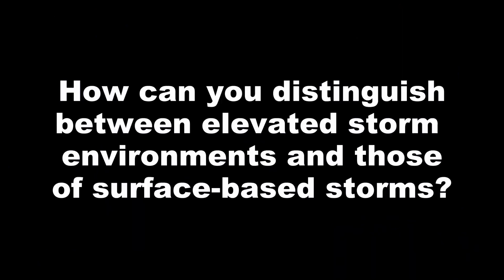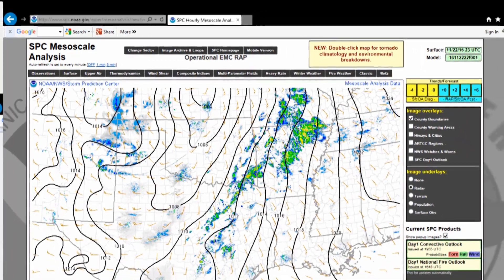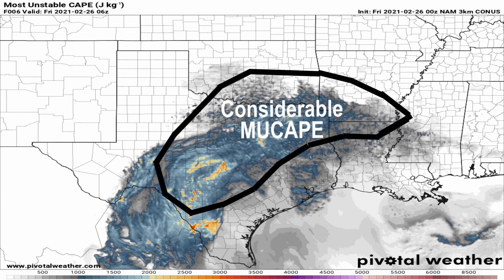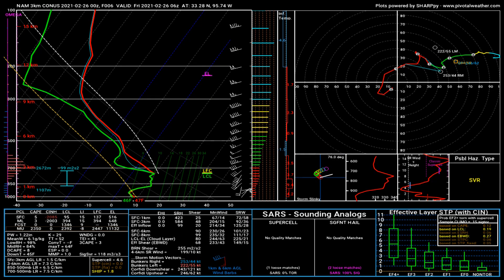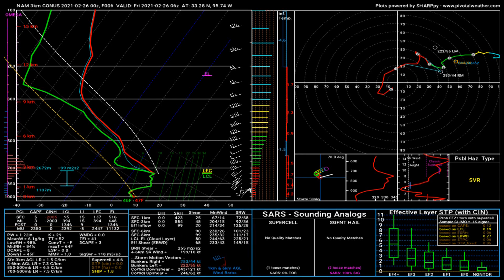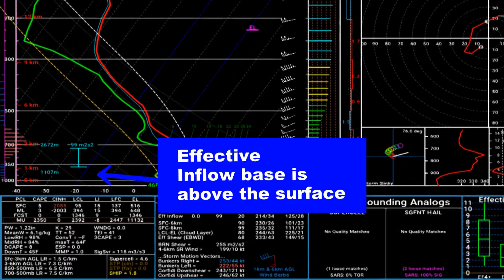How can you distinguish elevated storm environments from those of surface-based storms? One quick way is to compare SB CAPE and MU CAPE values on maps, such as a forecast model or the Storm Prediction Center's Mesoanalysis page. If an area has very little or no SB CAPE but does have appreciable MU CAPE, this could indicate elevated instability. On forecast soundings, you may note the lifted parcel path originating above the surface — as from the base of an inversion — unlike surface-based thunderstorm environments. Another way is to note the location of the effective inflow layer base; if this base is above the surface, it indicates that much of the instability is likely elevated.